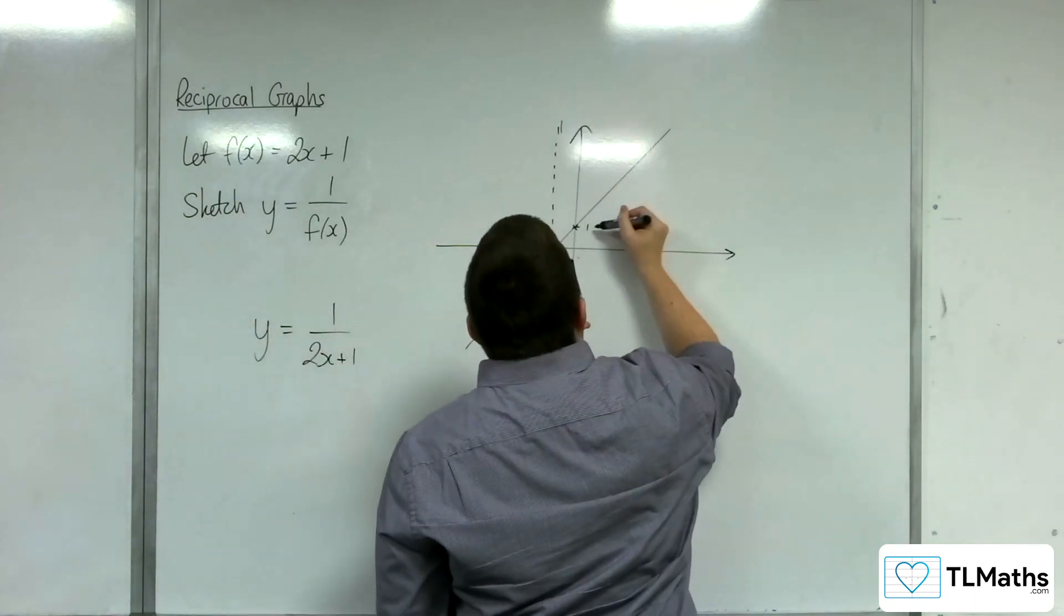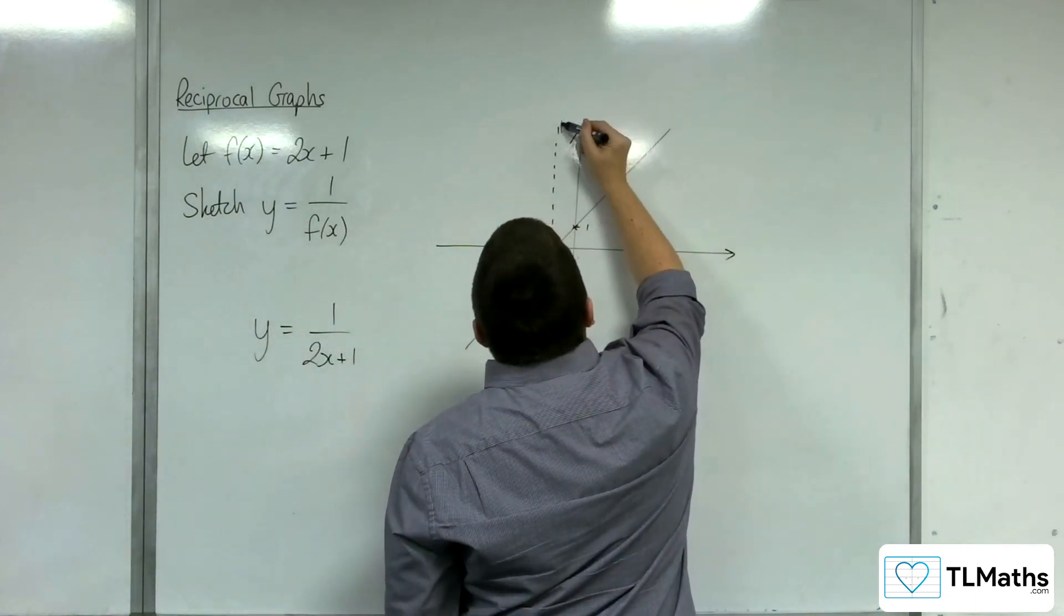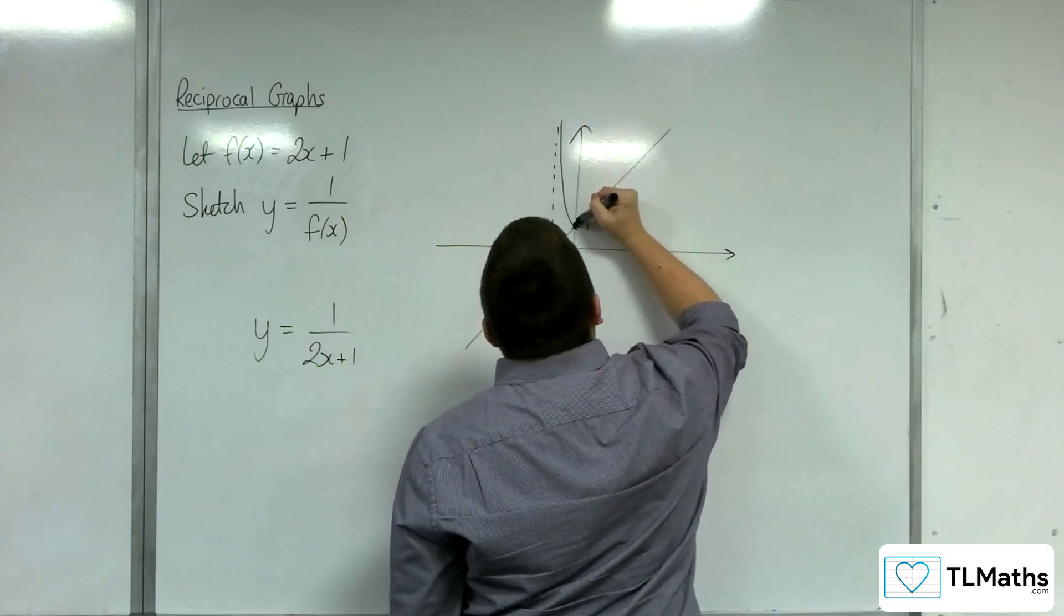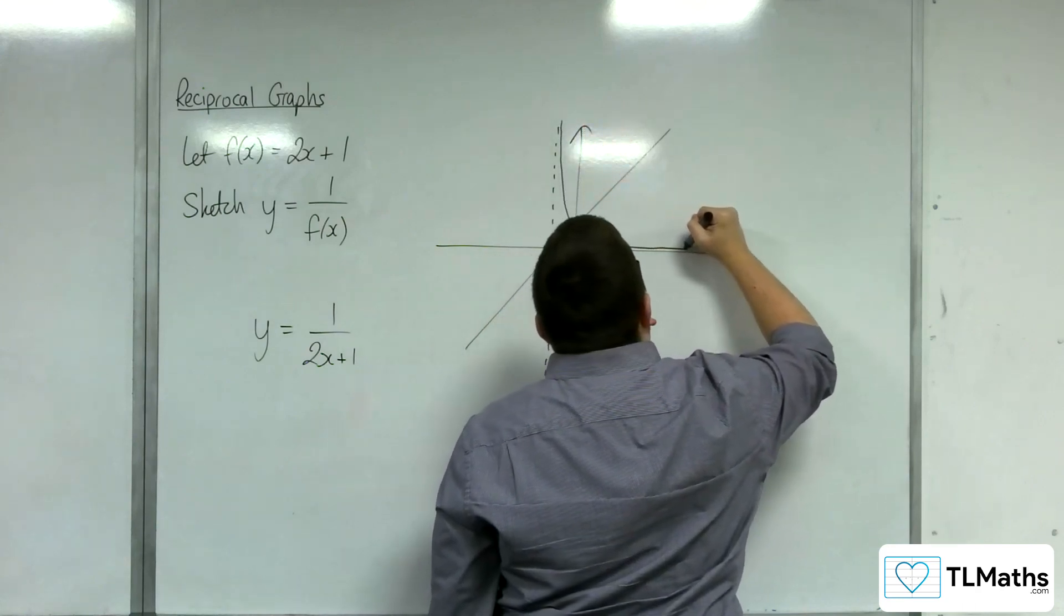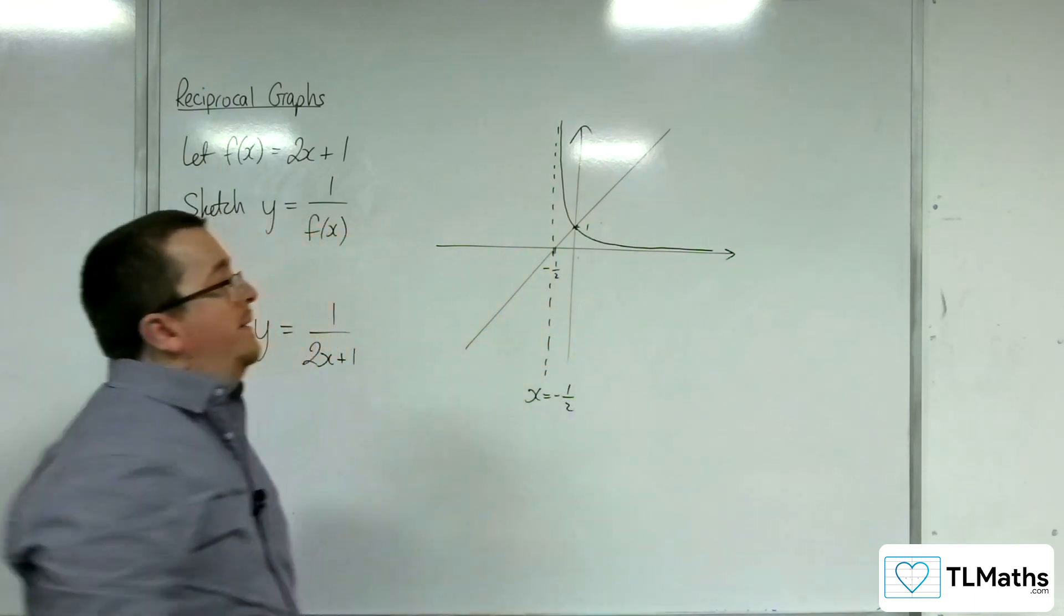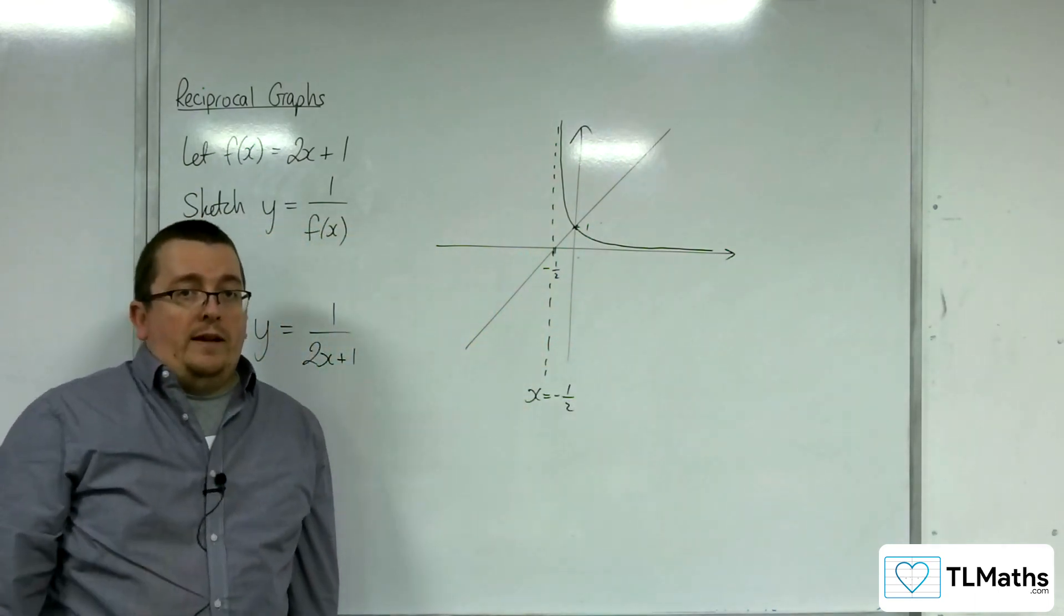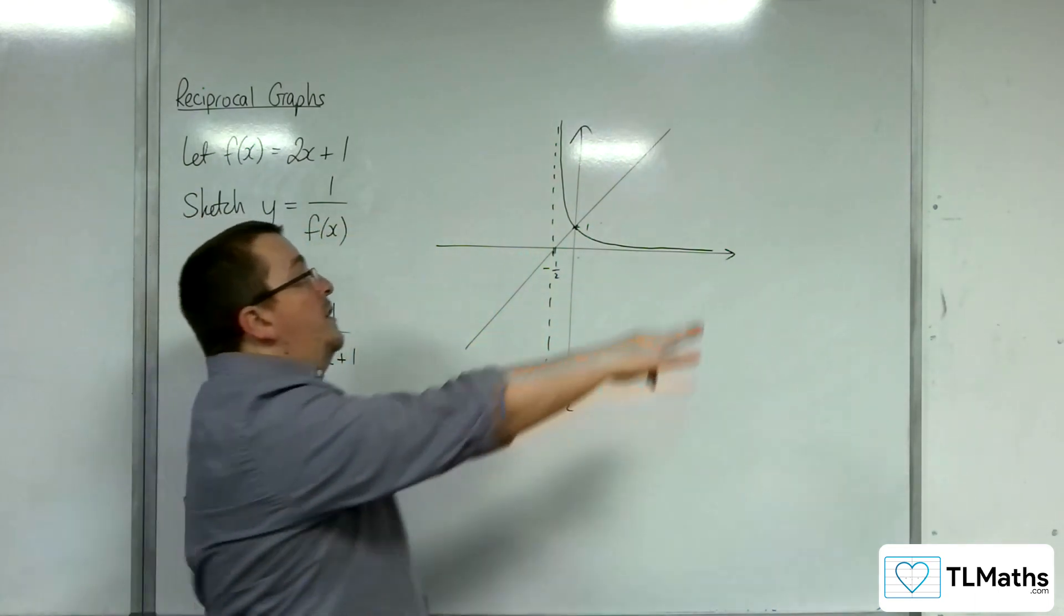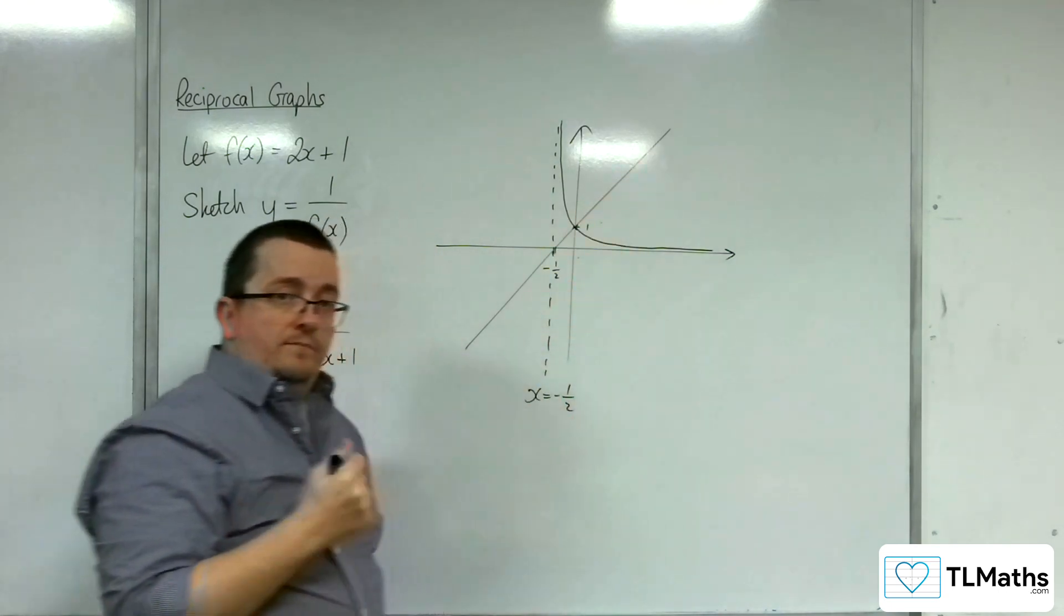So it must be decreasing past this point going that way. So we'd be looking at something like this. And it has to remain above the x-axis because it's positive there, because the original function is positive there.